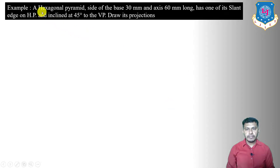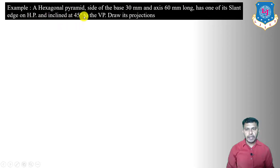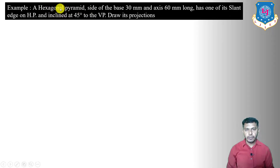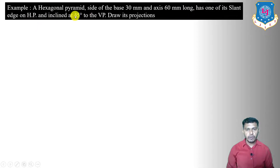The given problem is: a hexagonal pyramid, side of base 30 mm, axis 60 mm long, has one of its slant edges on HP and inclined at an angle of 45 degrees to the vertical plane. The solid is a hexagonal pyramid with base length 30 mm, axis 60 mm long, and conditions with both the horizontal plane and vertical plane are given.